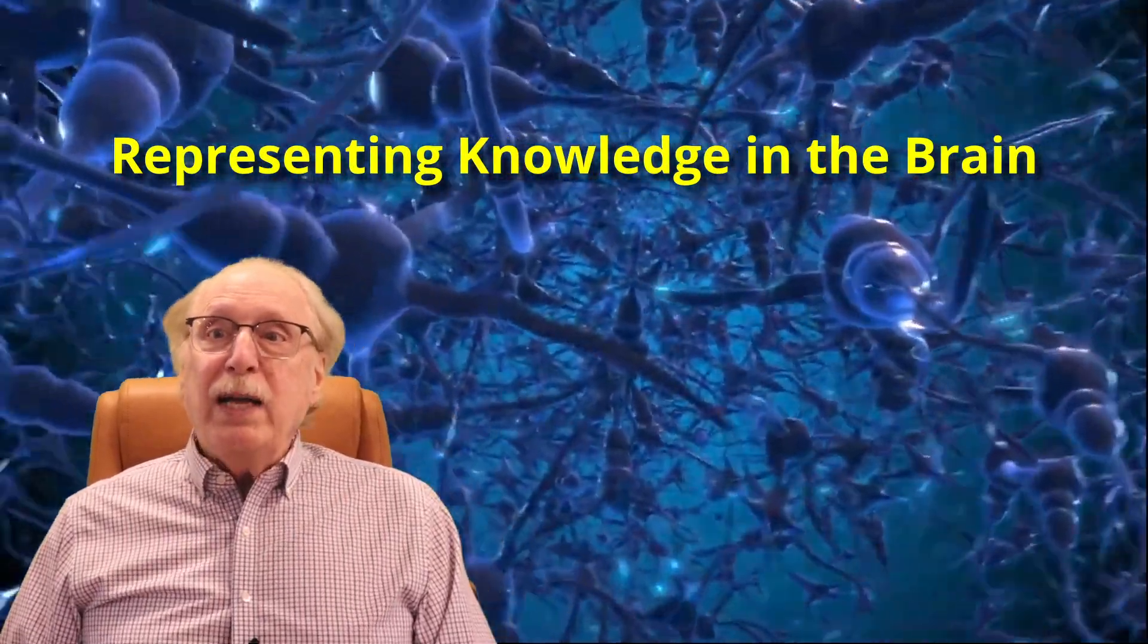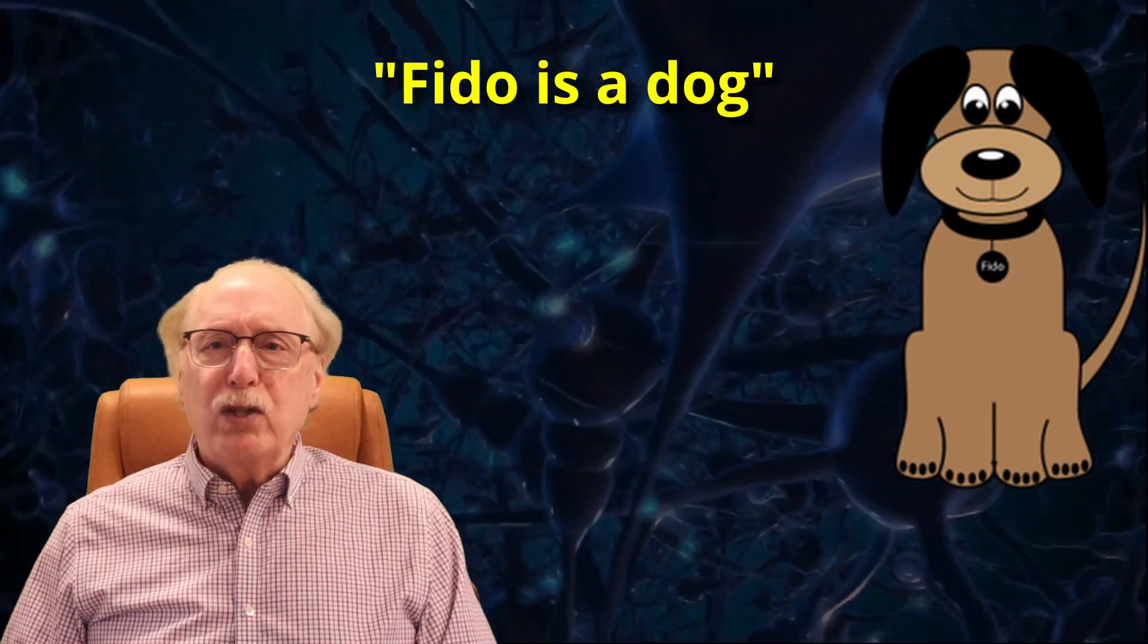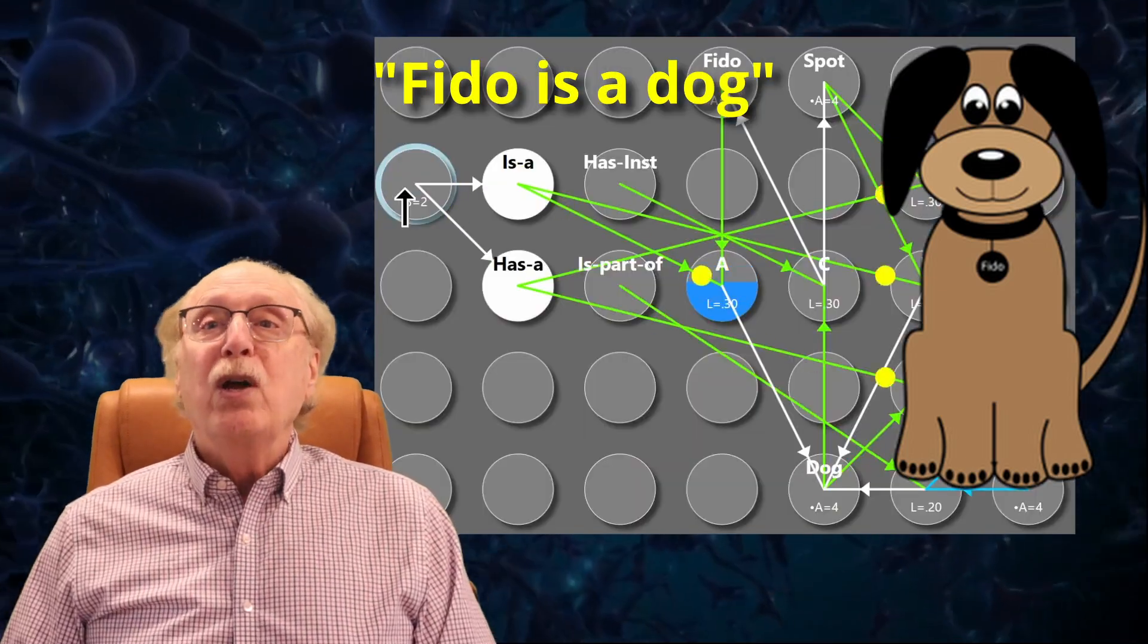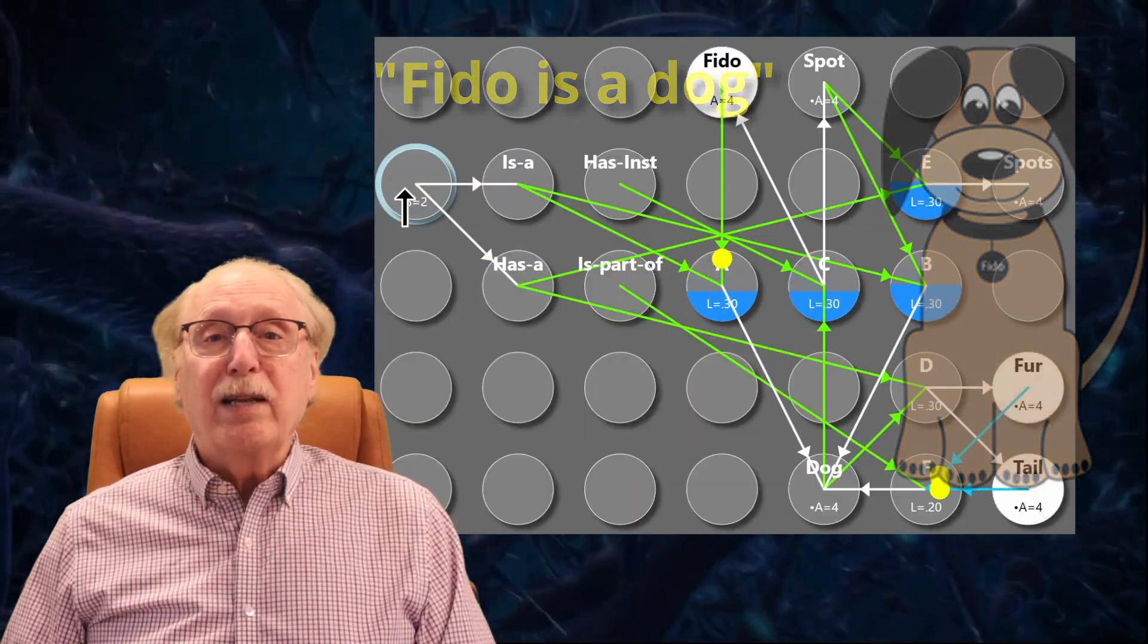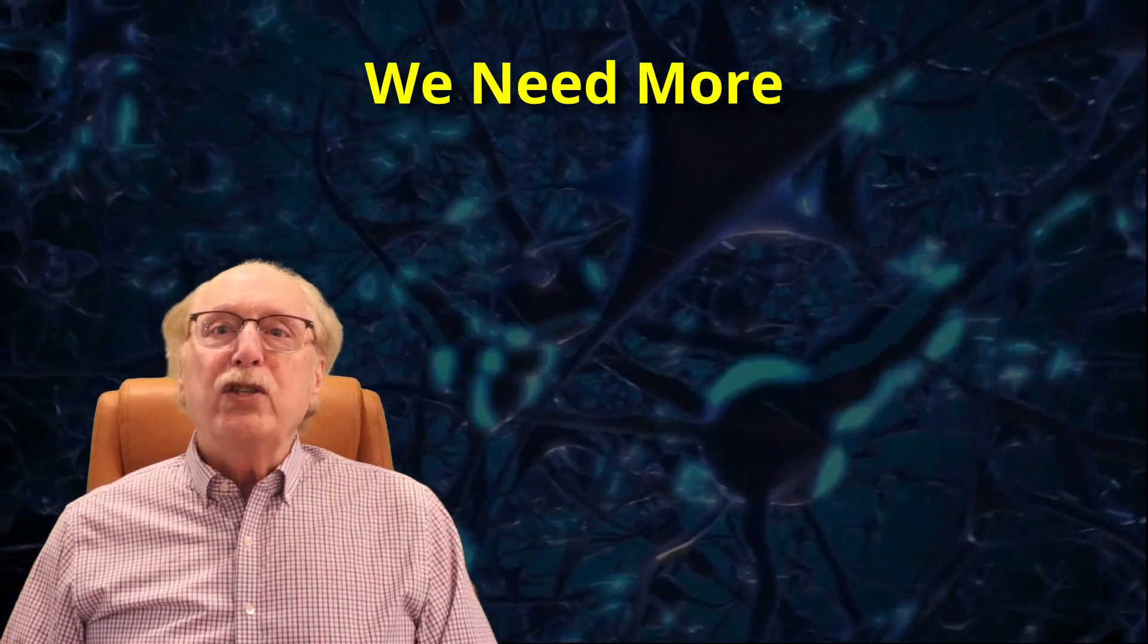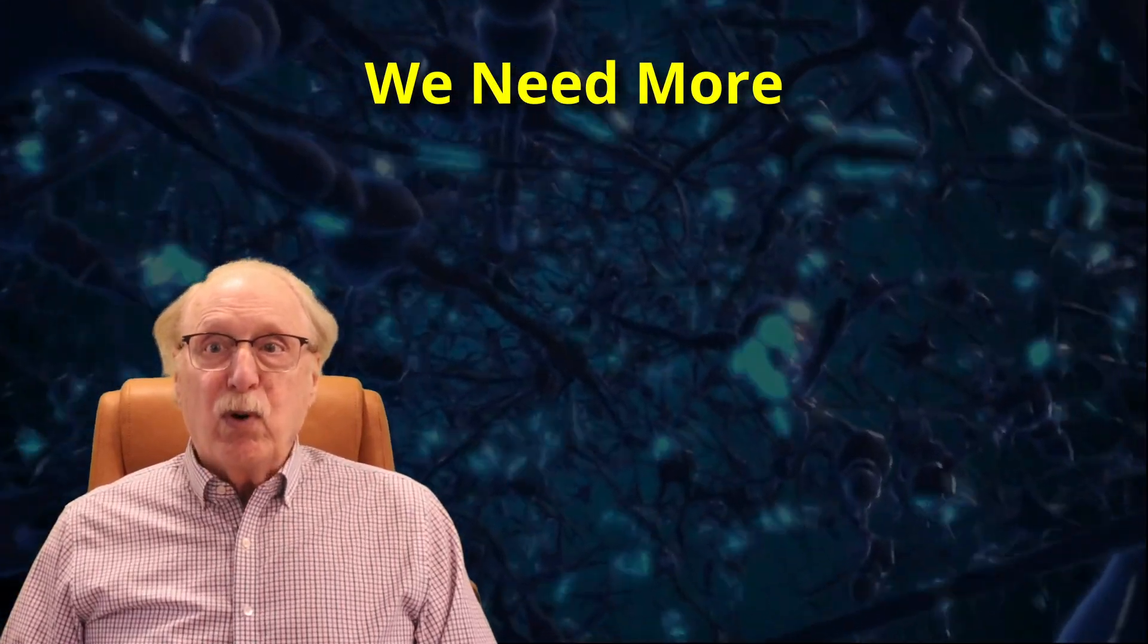In the previous video, I laid out the basic foundation for representing structured knowledge using simple neural circuits. We used my classic example, Fido is a dog, to demonstrate how neurons and synapses might encode relational information with the aid of intermediate neurons that act like logic gates. But as we deepen this model, we need a system capable of expressing richer, more flexible relationships, one that can support real-world reasoning and learning. This video outlines some essential enhancements to that system, building toward a biologically plausible general-purpose knowledge structure.